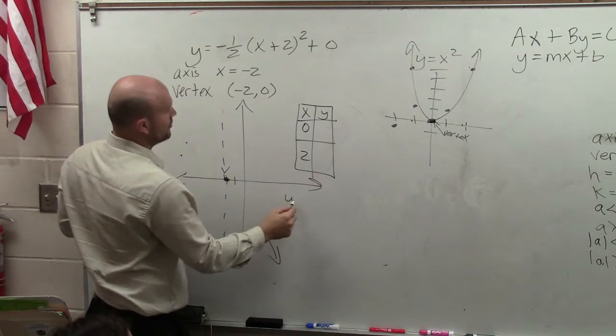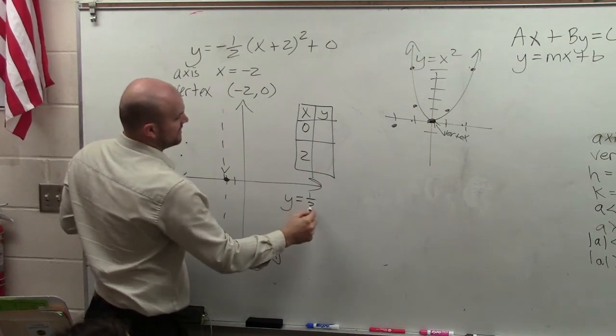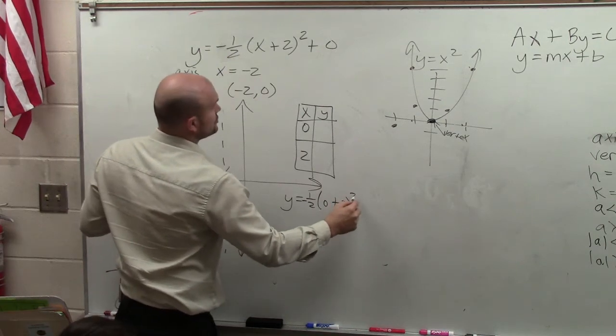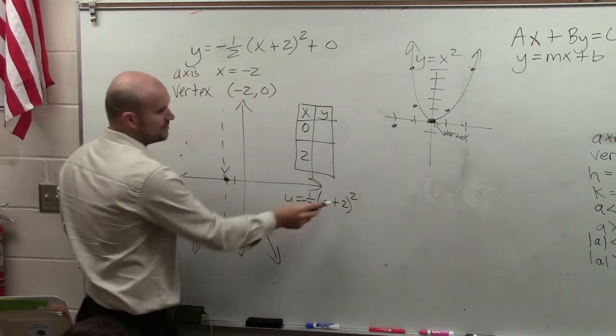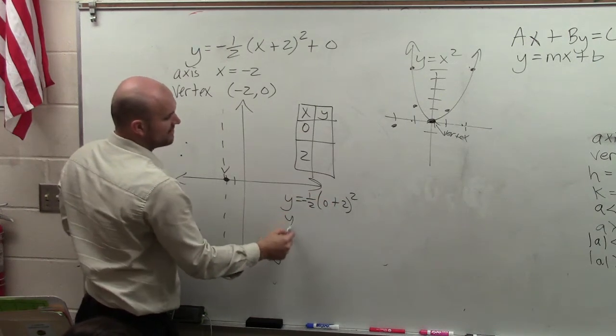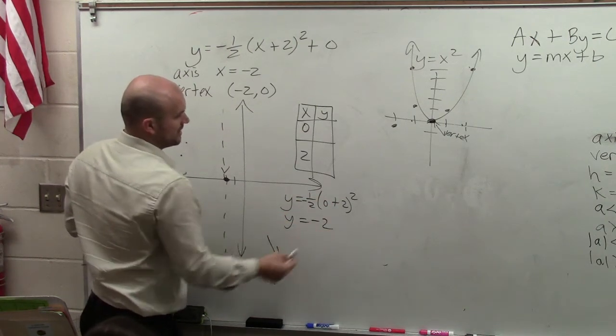Now, let's go and check our points and see what they come in at. So I have negative 1 half times 0 plus 2 squared. I don't really need to write the 0. So 0 plus 2 is 2. 2 squared is 4. 4 times negative 1 half equals negative 2.